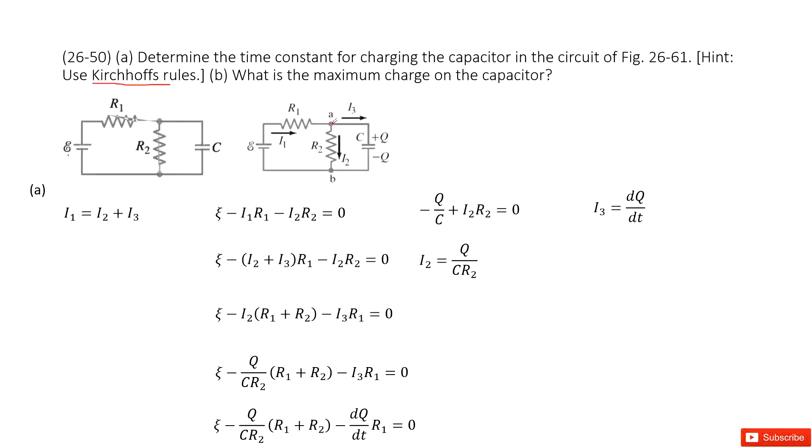First of all, we look at point A. We see the current is conservative. So I1 equal to I2 plus I3. So we write it there.